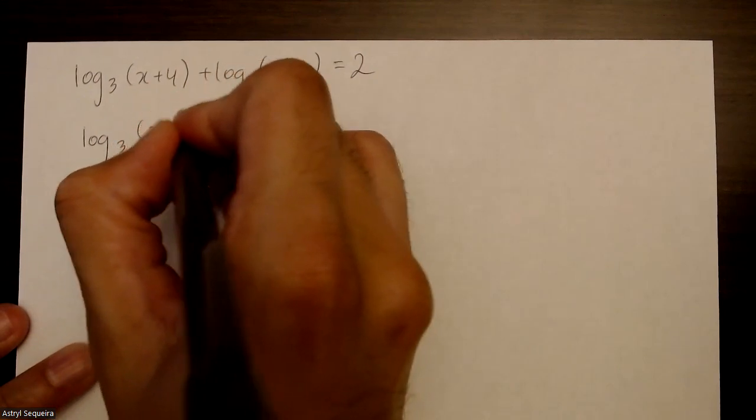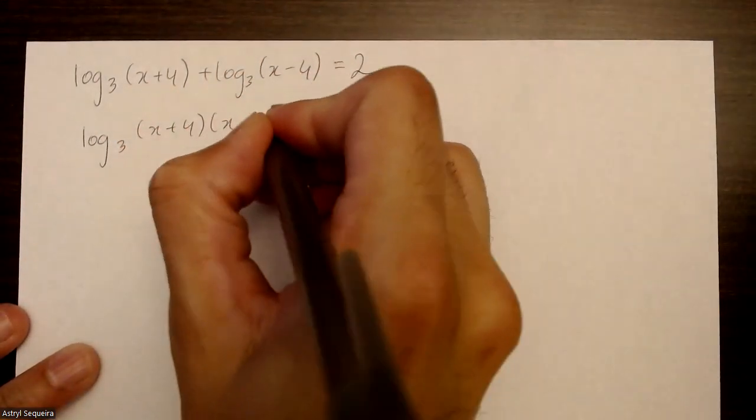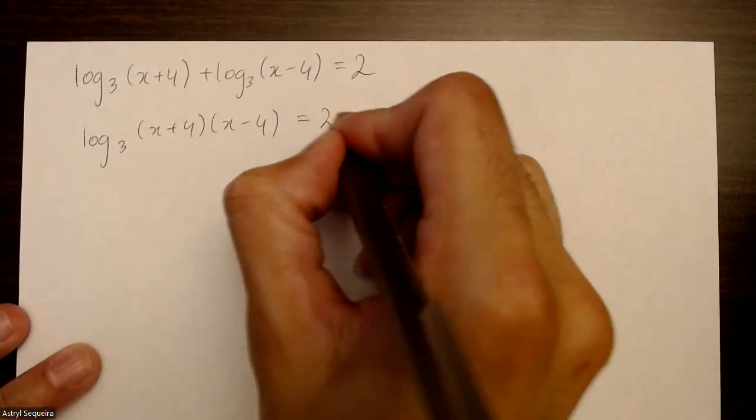So I have log base 3 of (x plus 4)(x minus 4) equals 2.